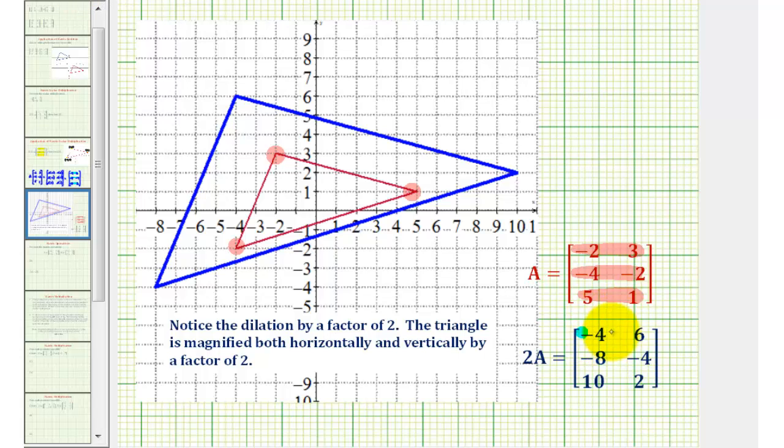We have the vertex negative 4, 6 here, negative 8, negative 4 here, and 10, 2 here.